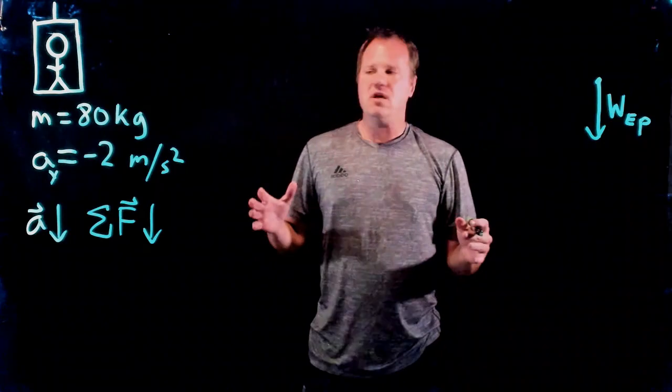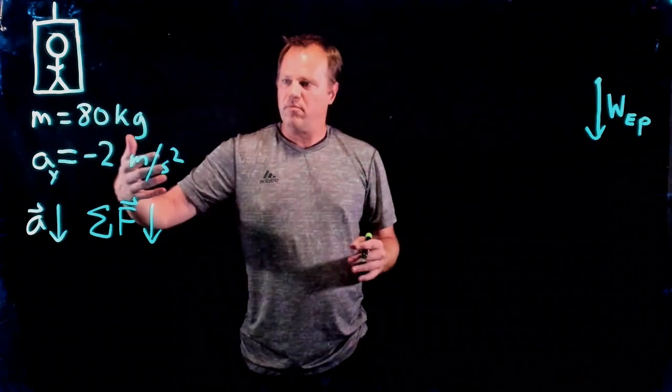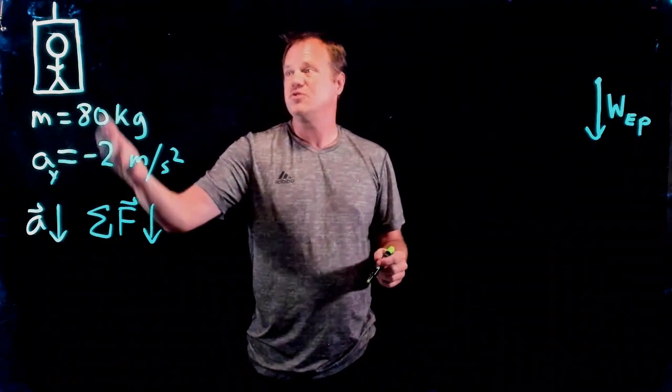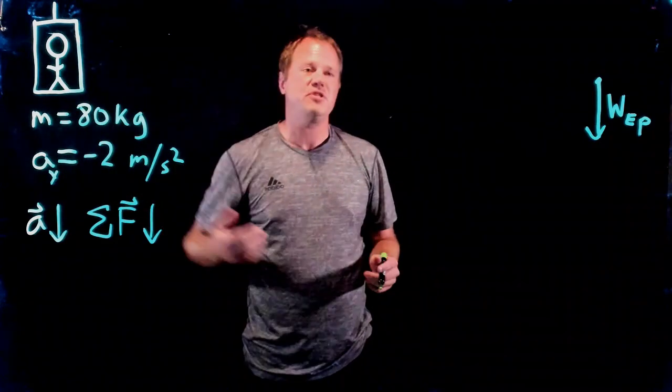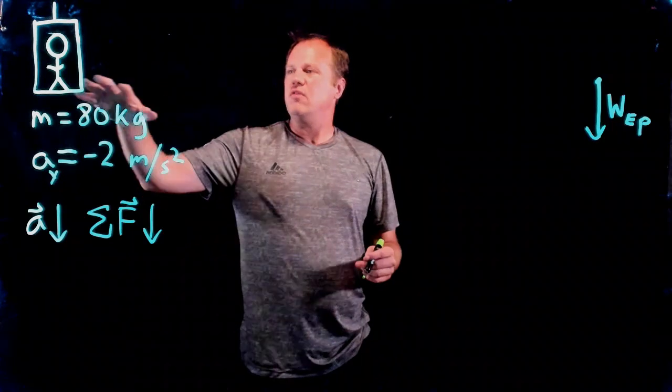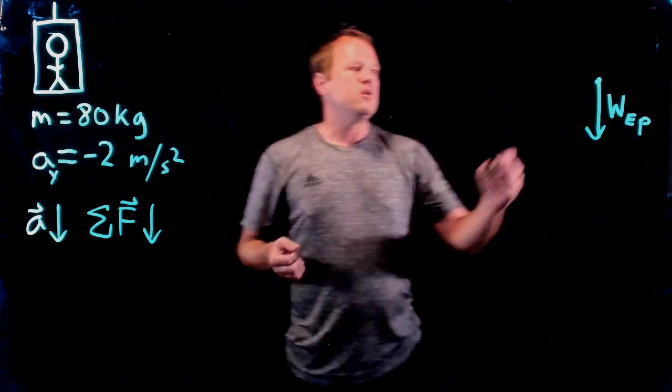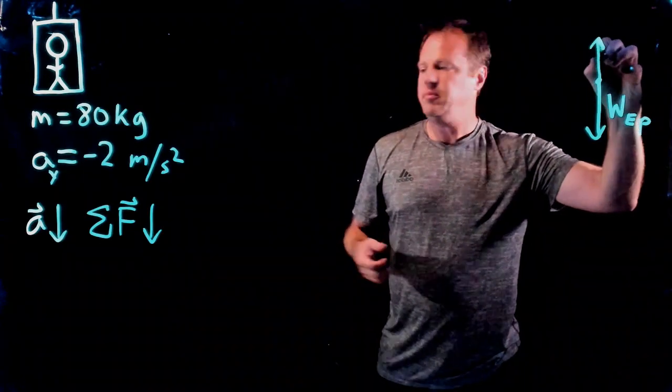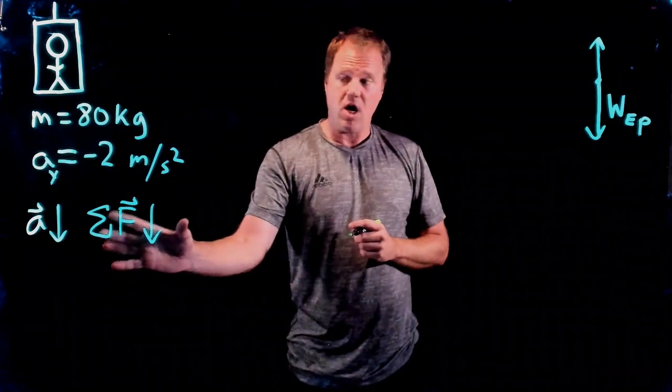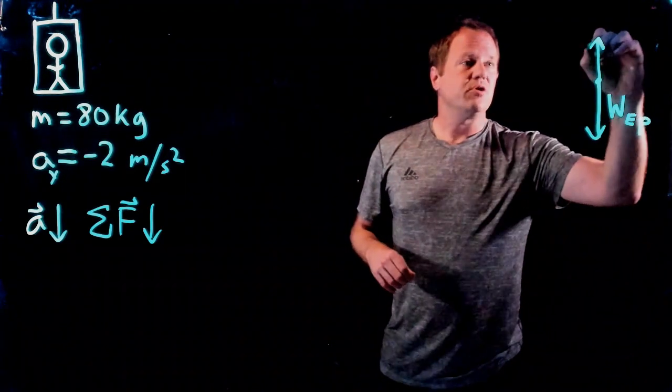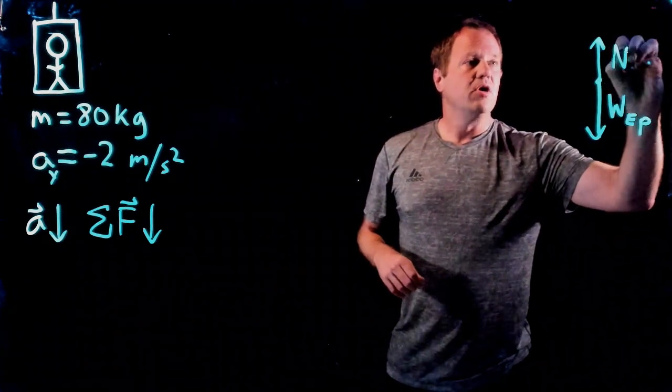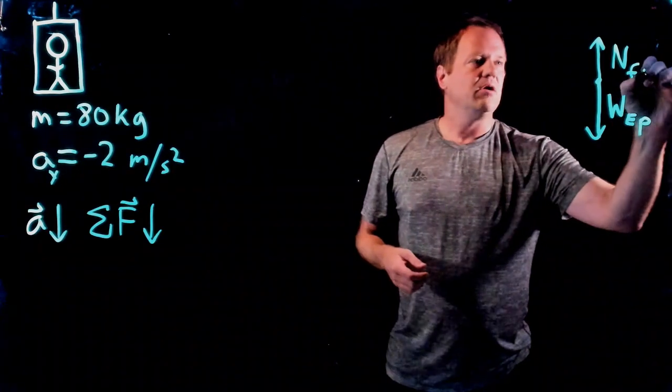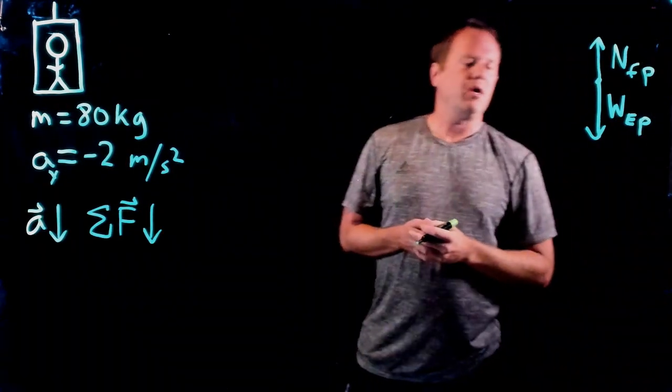The floor of the elevator prevents the person from being in free fall—the acceleration would be negative 9.8 meters per second squared if the person wasn't in the elevator or standing on anything. The floor gets in the way, so there is a normal force which has to be a little bit less to be consistent with the claim that the net force is down. I draw the arrow a little bit smaller. For the normal force, let me use F for floor of the elevator exerted on the person.